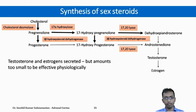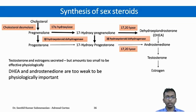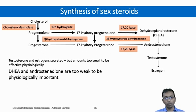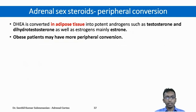The point to be noted is that even though testosterone and estrogen are secreted from adrenal glands, the amount is very small to be effective physiologically. Further, DHEA and androstenedione, which are secreted in substantial amounts, are very weak androgens. However, DHEA is converted in adipose tissue into potent androgens such as testosterone and dihydrotestosterone, as well as estrogens, mainly the estrone type.